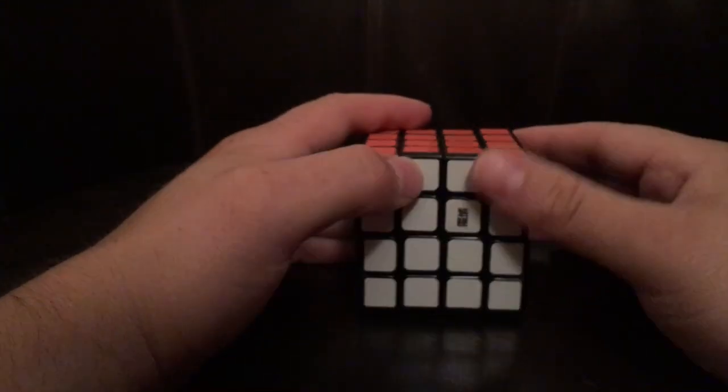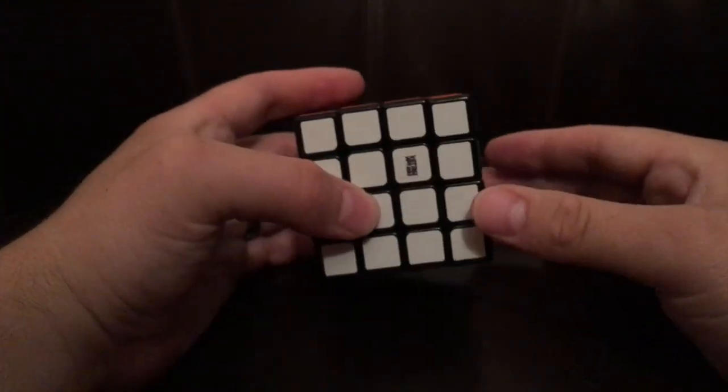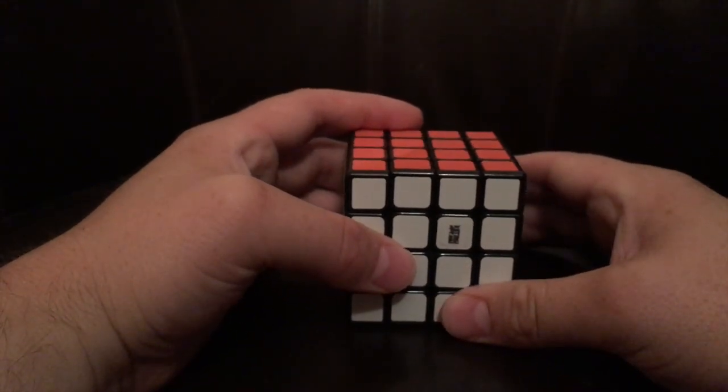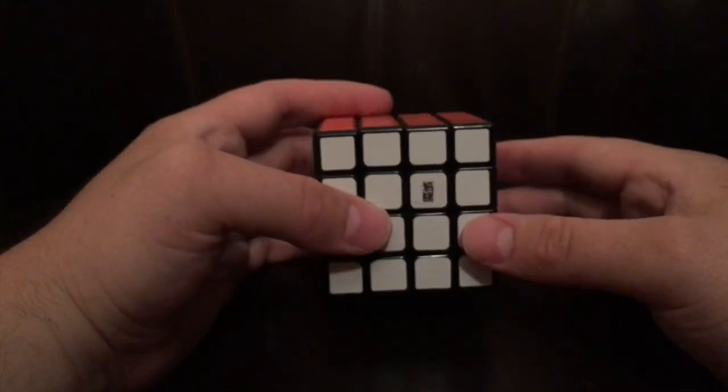So I always start with the white facing forward because it's easy to reference because the sticker is right there, so that's why I pick. You can pick any side and follow along, but with that said, it's pretty simple steps.